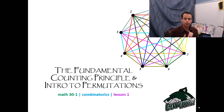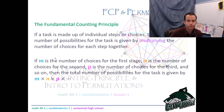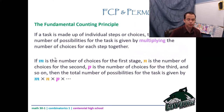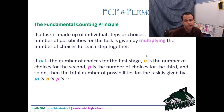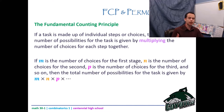In our first lesson, we want to introduce something called the fundamental counting principle, which you've actually been doing for a long time — nobody ever calls it that. Here is the mathematical definition: if a task is made up of individual steps or choices, then the total number of possibilities for the task is given by multiplying the number of choices for each step together. If M is the number of choices in the first stage, N is the number in the second, and P is the number for the third, the total is M times N times P times whatever.